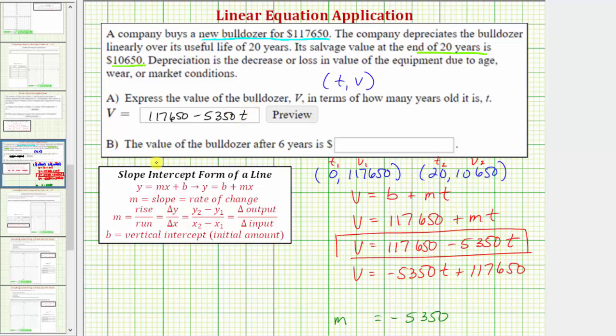And for part B, we're asked to determine the value of the bulldozer after six years, so we need to find the value of V when T equals six. So we need to find V of six, which equals 117,650 minus 5,350 times six.